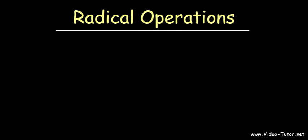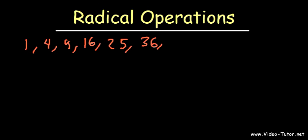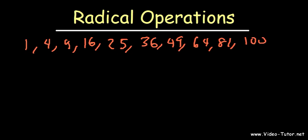Let's start with simplifying radicals. You need to know the perfect squares. 1 squared is 1, 2 squared is 4, 3 squared is 9, 4 squared is 16, 5 squared is 25, 6 squared is 36, 7 squared is 49, 8 squared is 64, 9 squared is 81, 10 squared is 100, 11 squared is 121, 12 squared is 144.